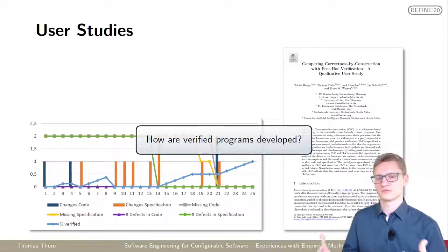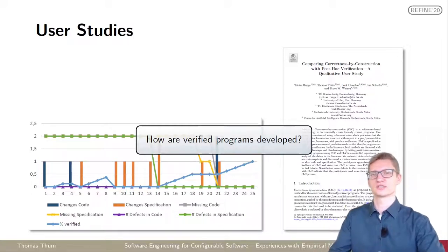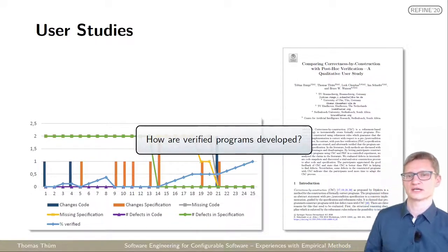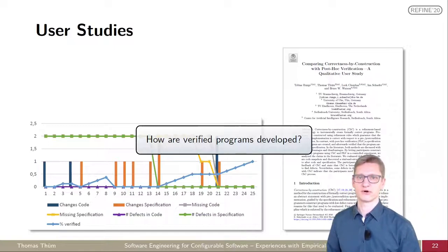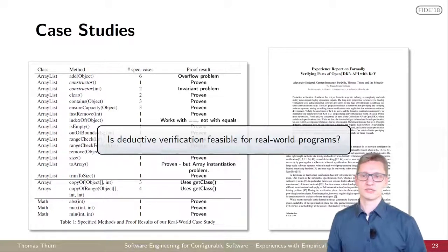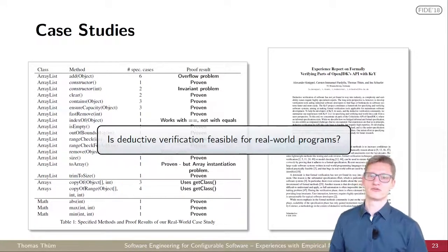We found out that when you develop verified programs, people are actually writing the correct program, but they need to change it again and again and get the specification right in order to let the verifier verify the system. We were interested also to understand, is this formal verification, deductive verification, actually feasible for real-world programs? We found out that there are still a number of problems. For instance, in this case, we started to verify OpenJDK, a number of classes and methods in there, and we found problems in their informal specification in the code. So there are actually real bugs, real problems within the open source implementation.